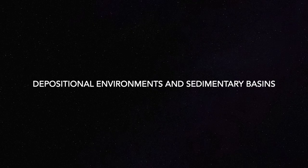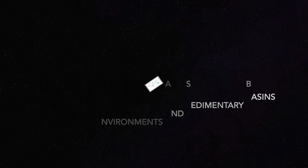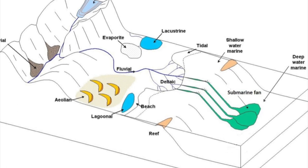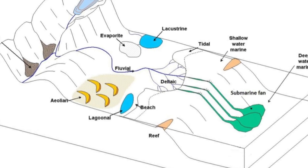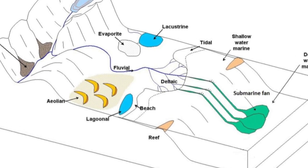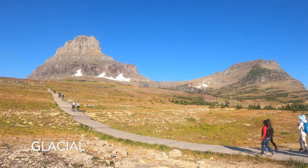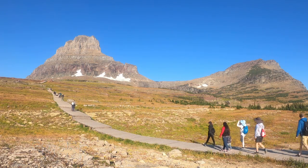There is a wide range of depositional environments, both on land — like glaciers, lakes, and rivers — and in oceans, like deltas, reefs, shelves, and the deep ocean floor. In order to be preserved, sediments must accumulate in long-lasting sedimentary basins, most of which form through plate tectonic processes. When basins form, it creates accommodation space, which is space that accommodates the deposition of sediments.